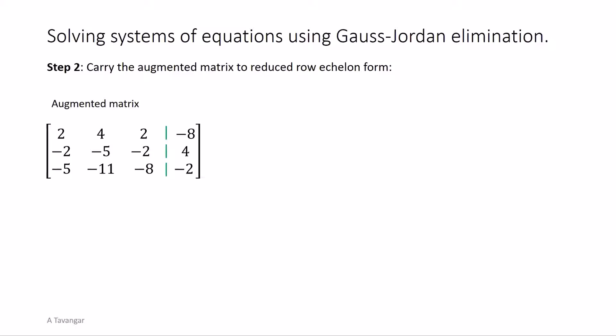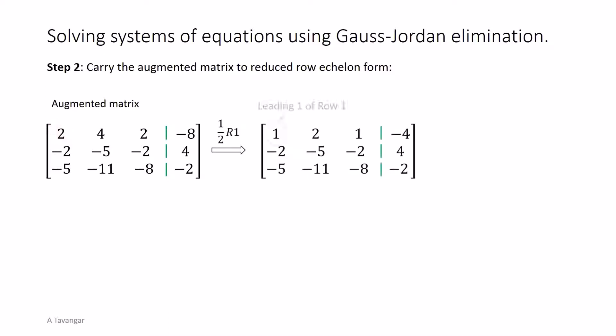We begin with the augmented matrix in its original form. Starting from the left we find the first non-zero column. In this example all columns are non-zero, and thus the first column is the first pivot column. The position at the top of this column, which is number two, is the first pivot position or leading entry of the first row. The first step is to create a one in the upper left corner, so we multiply the first row by one over two. This number one is called the leading one of the first row. Then we use this leading one to create zeros in the other positions in the first column, which are negative two and negative five.